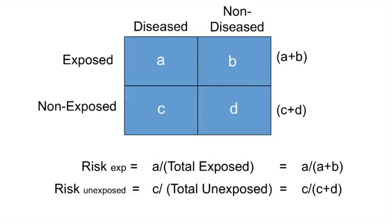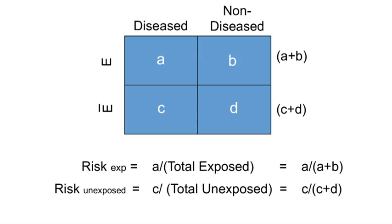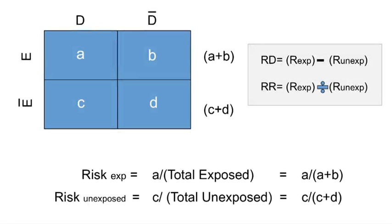Let's start with risk. We can simplify the table using E for exposed and Ē for non-exposed, D for diseased and D̄ for non-diseased. Applying our risk difference and risk ratio formulas: the risk difference is A divided by (A plus B) minus C divided by (C plus D), and the risk ratio is A divided by (A plus B) divided by C divided by (C plus D).